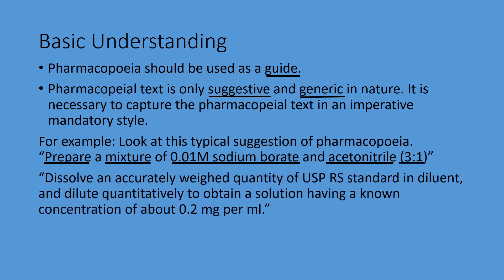See the other example: 'Dissolve an accurately weighed quantity of USP RS standard in diluent and dilute quantitatively to obtain a solution having a known concentration of about 0.2 mg per ml.' That is all that is given — no more details. So it is very important that you draft a Standard Test Procedure, or STP, with details of each step of the test method. Your STP should have details of how much standard is taken, how much it is diluted to, so that you get a final solution of about 0.2 mg per ml. All these details are required.